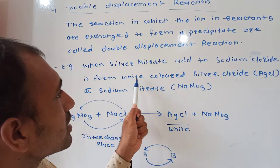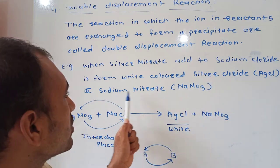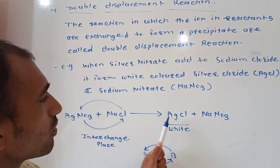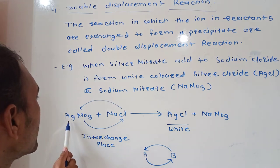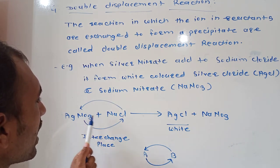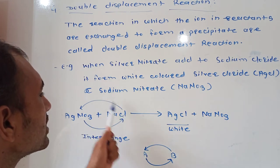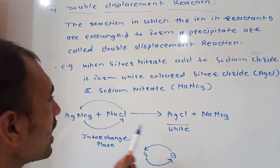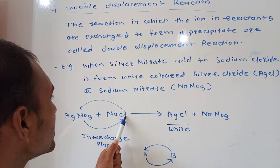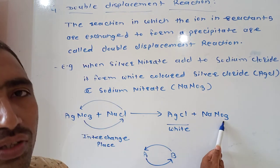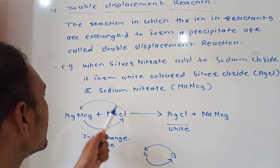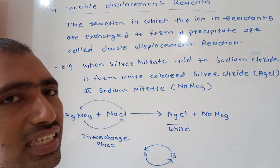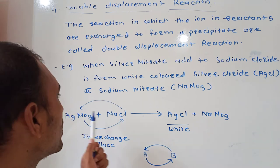When white color precipitate forms, silver chloride and sodium nitrate. The reaction is AgNO3 plus NaCl, it forms AgCl plus NaNO3.